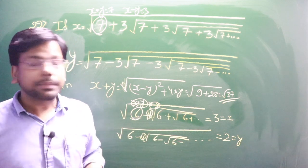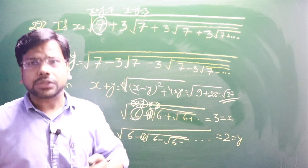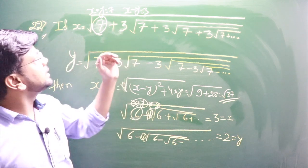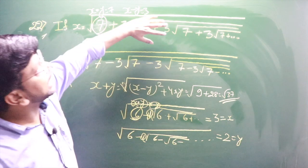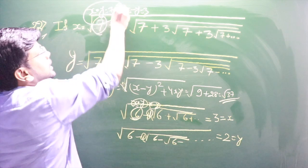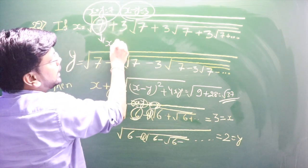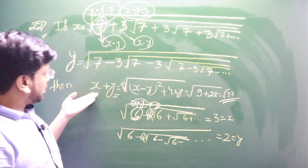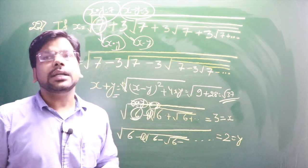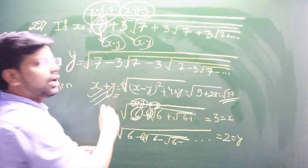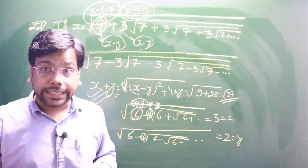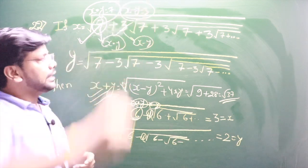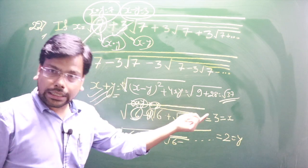The answer is root 37 — hardly a 4–5 second question if you observe this pattern. Your mentors should teach you: the first term in these nested radical expressions is the product x·y, and the second term is the difference x − y. From those, you can extract any algebraic combination using basic formulas. I needed x + y, so I just plugged values in and got the answer.